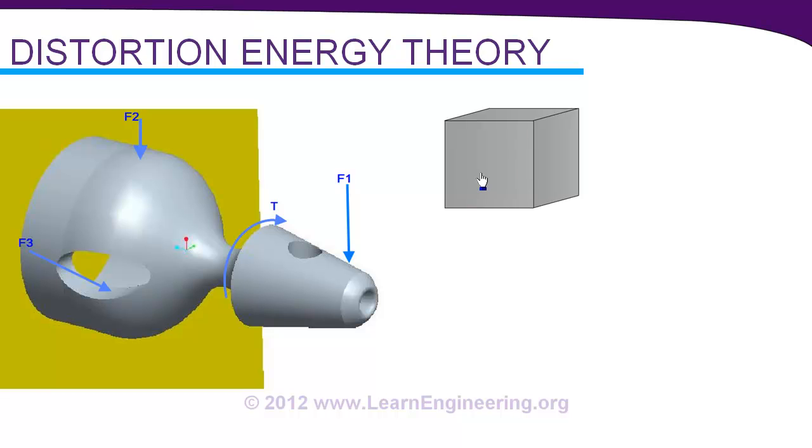So few words about distortion energy theory. Consider this simple cube. When stress is acting on this cube there can be two components of deformation for this material. Either it can undergo volumetric deformation like this or it can undergo a shape deformation like this. It is also known as angular distortion or shear distortion.